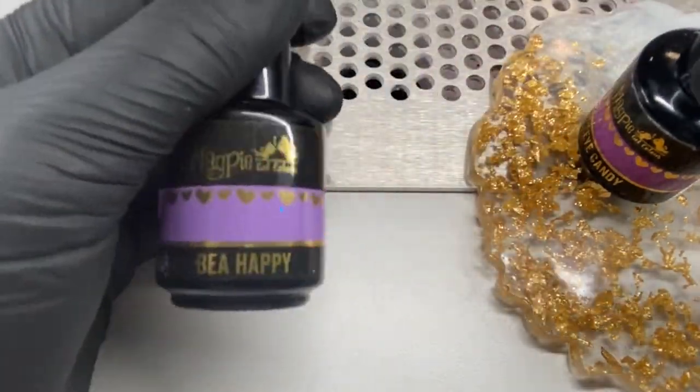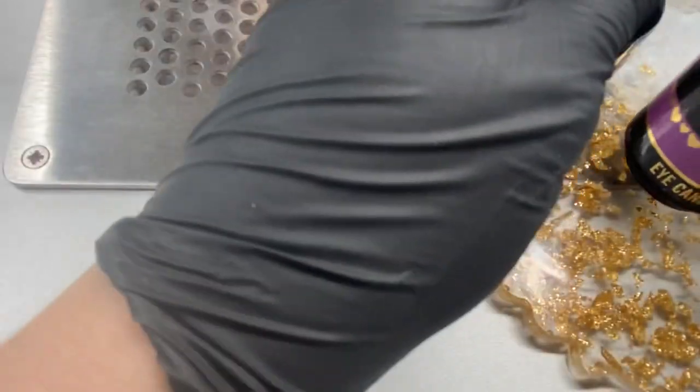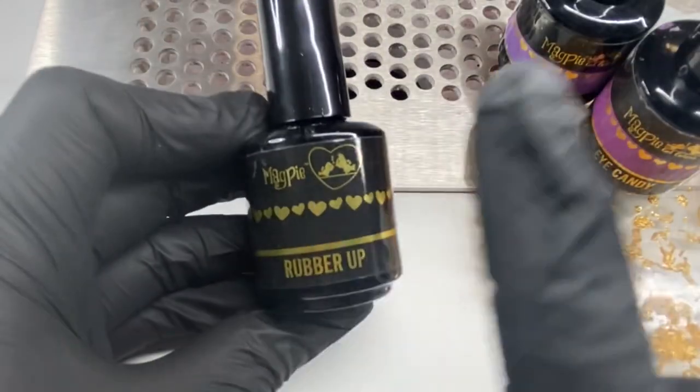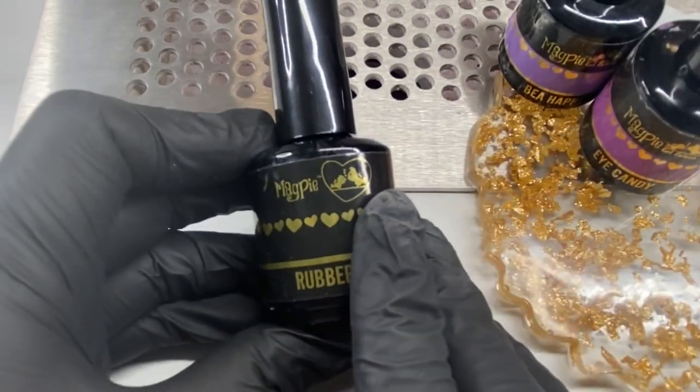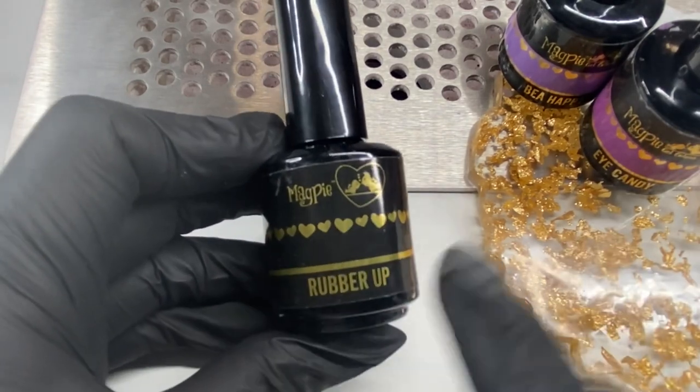I'm going to use Be Happy and Eye Candy as my ombre colors. I'll do a 50-50 mixture with Rubber Up and Be Happy, and Rubber Up and Eye Candy on my palette.